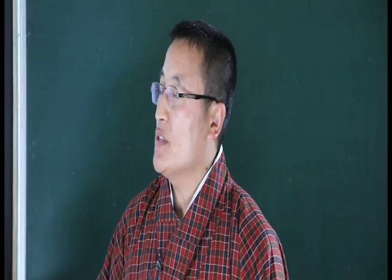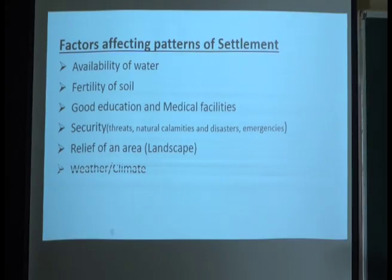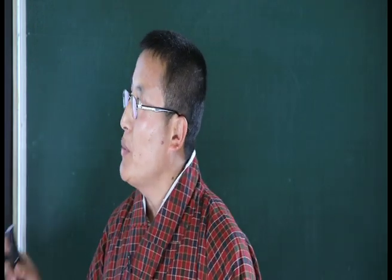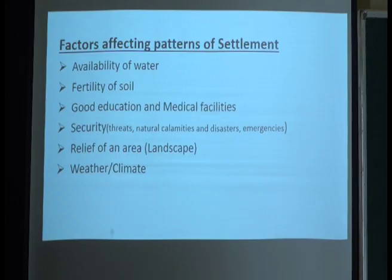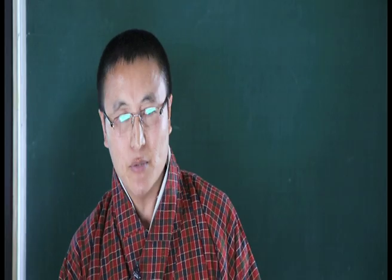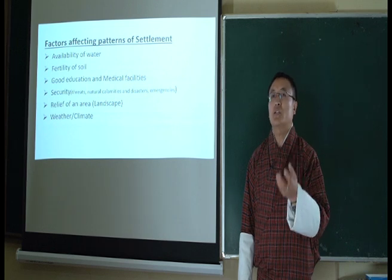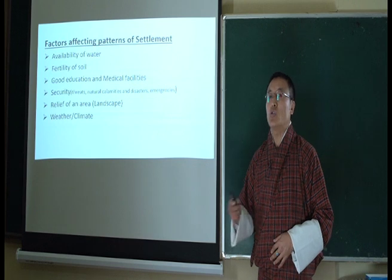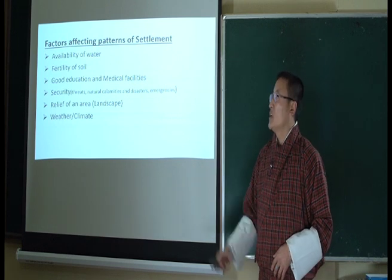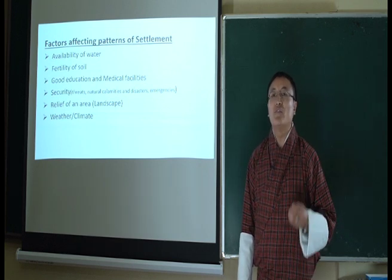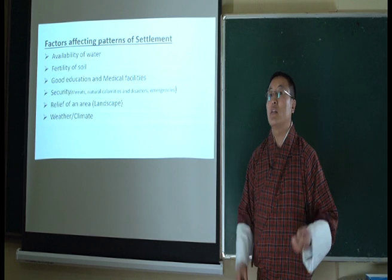Now we have seen the five patterns of settlement. The next topic is the factors affecting these patterns. The factors are: availability of water, fertility of soil, good education and medical facilities, security, relief of an area, weather and climate, and economic opportunities. First, when there is an adequate amount of water in a place, people like to settle there. Second, if there is good fertile soil, people also like to settle down there, and if the soil is infertile, people won't settle.